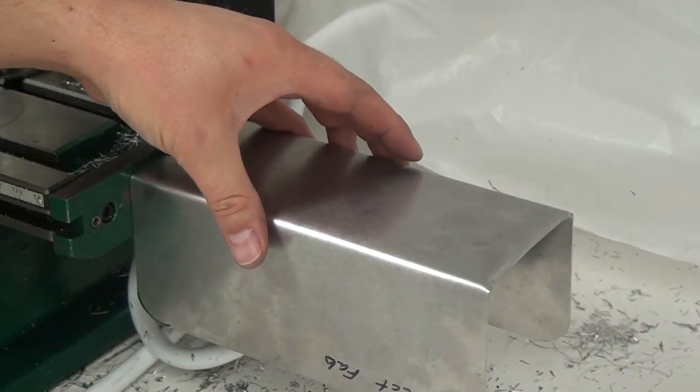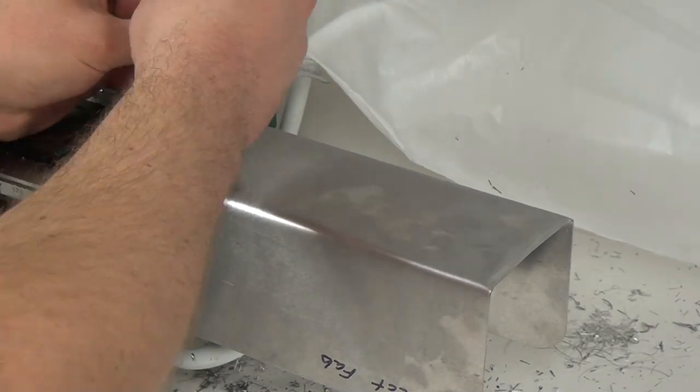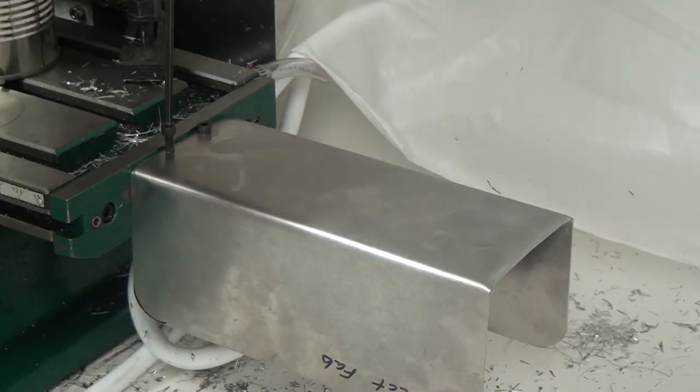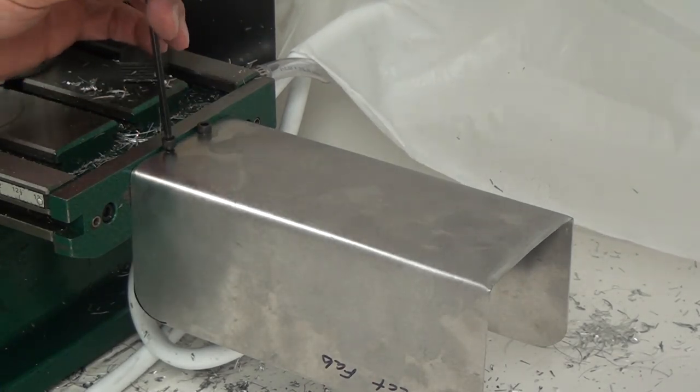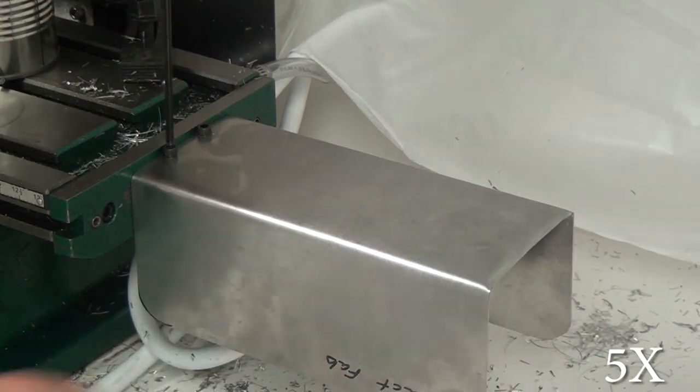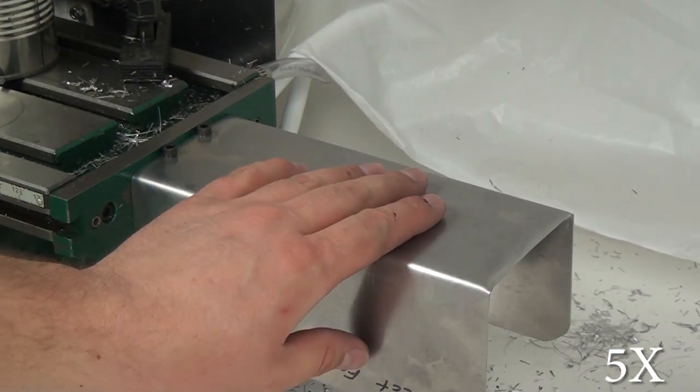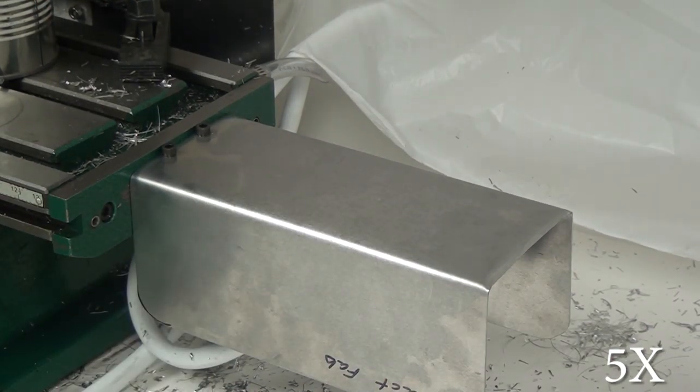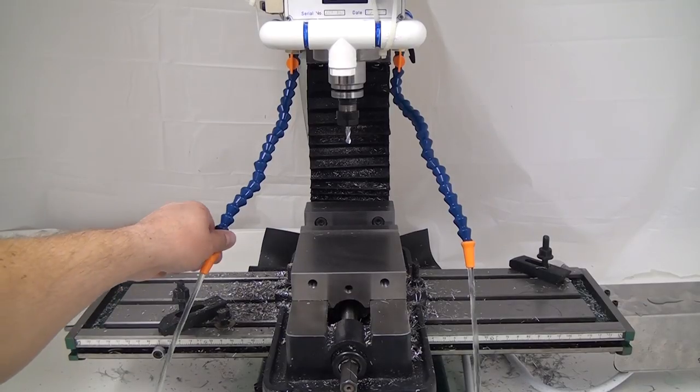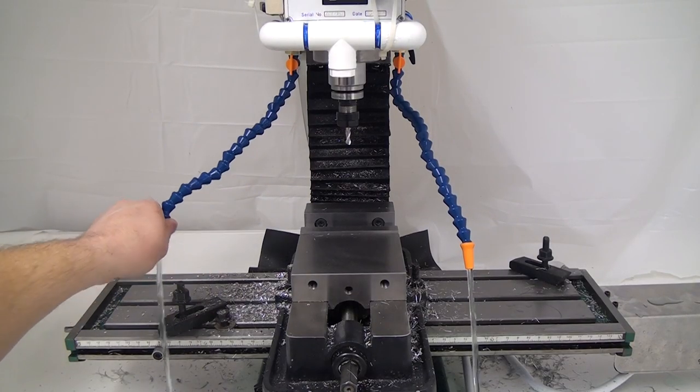You'll notice I did hammer a drip edge into the back of the shield. I just did that by putting a block of wood underneath the edge of the shield, then using a ball peen hammer, just rounding them over. That will just allow the coolant to drip right off the edge without rolling up underneath the shields.